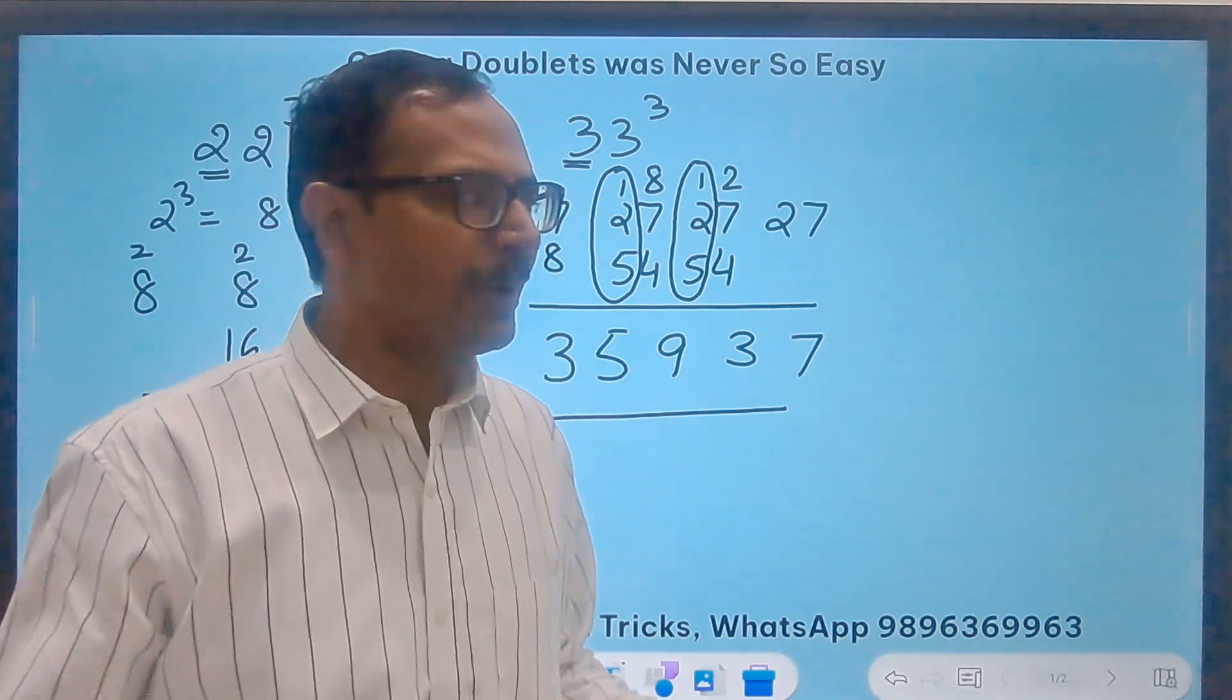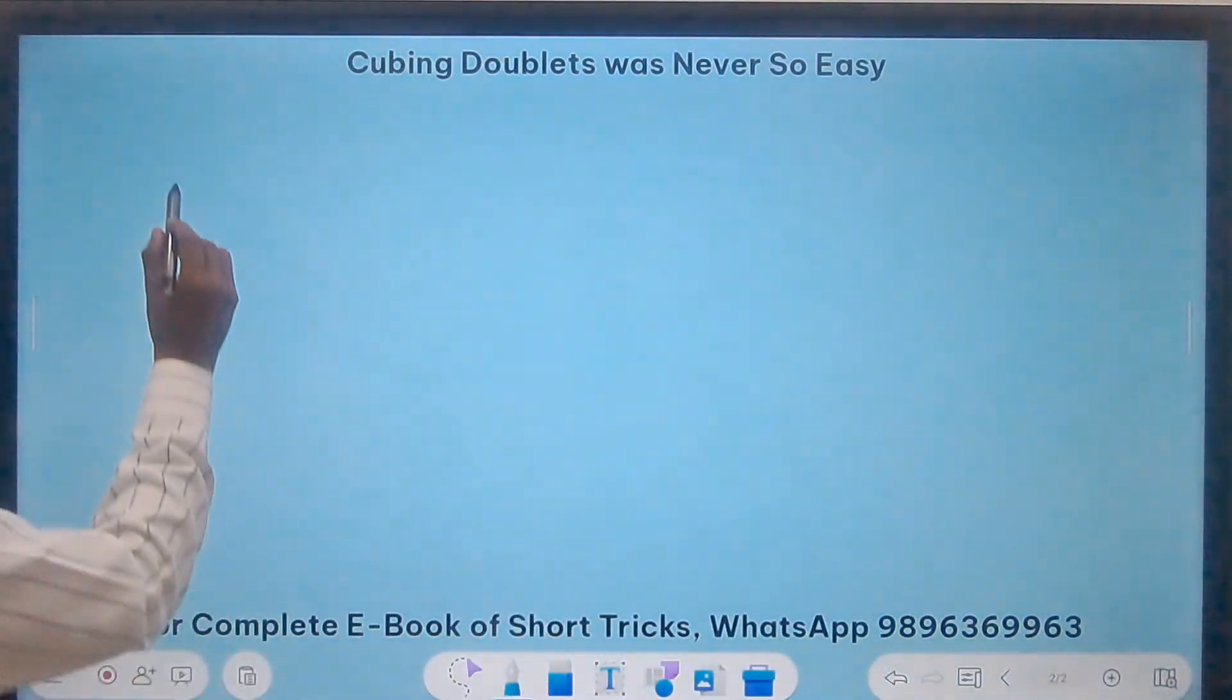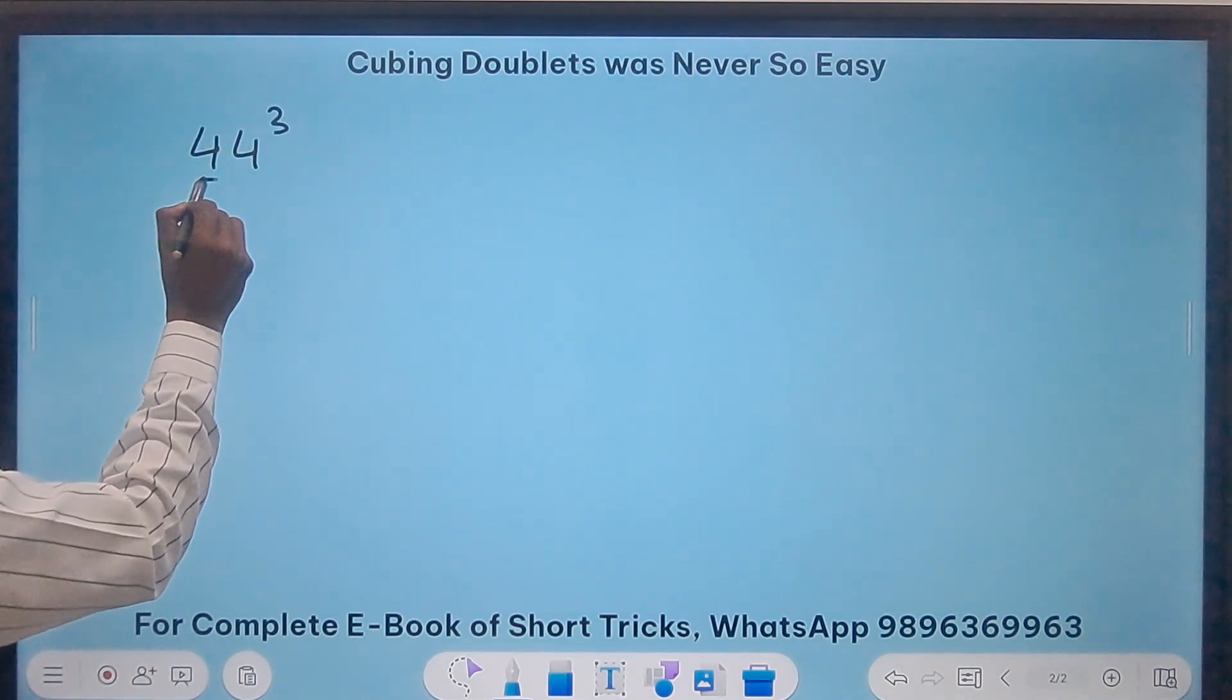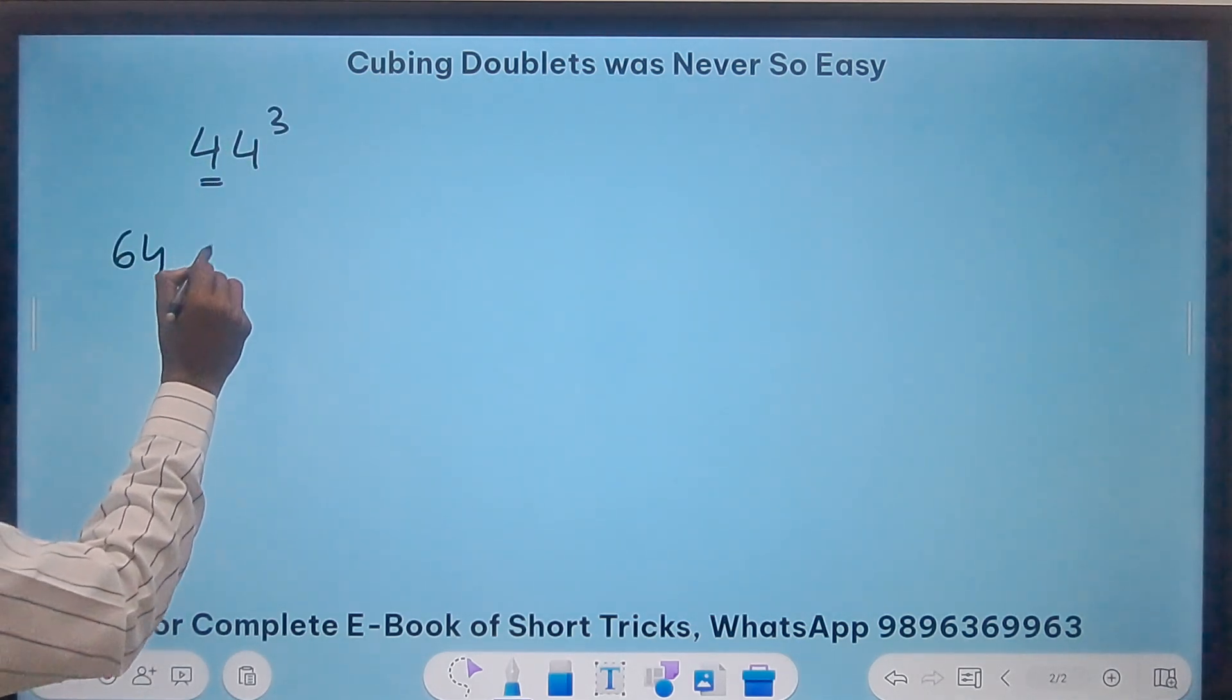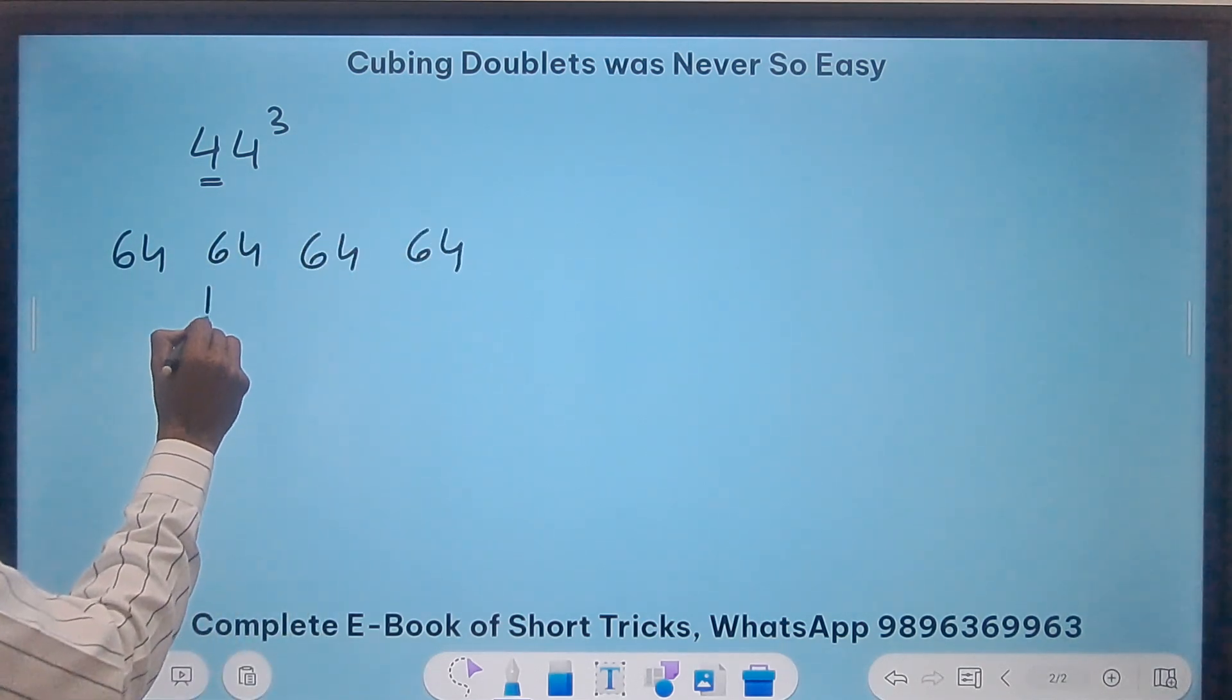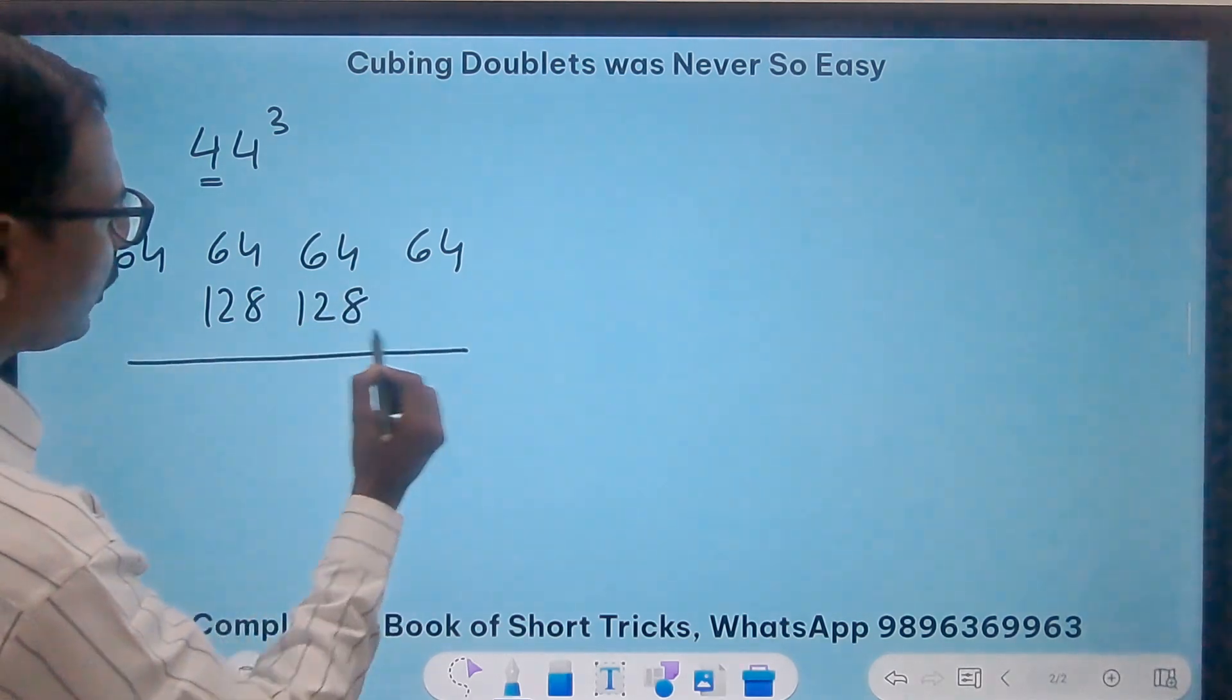You want me to do some more? We can take like two more examples. Suppose I have to do 44 cube. So 4 cube is 64. So I will write 64, 64, 64, 64. And then 128, the double. 128, the double.